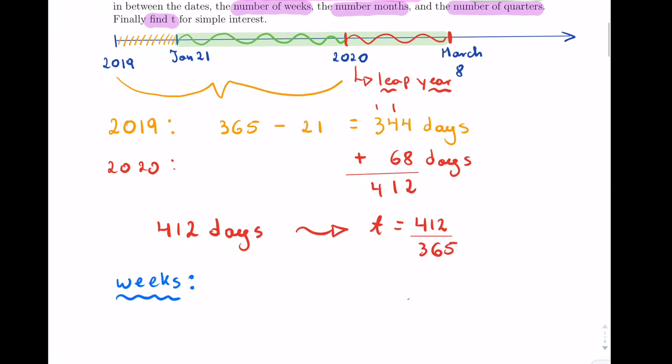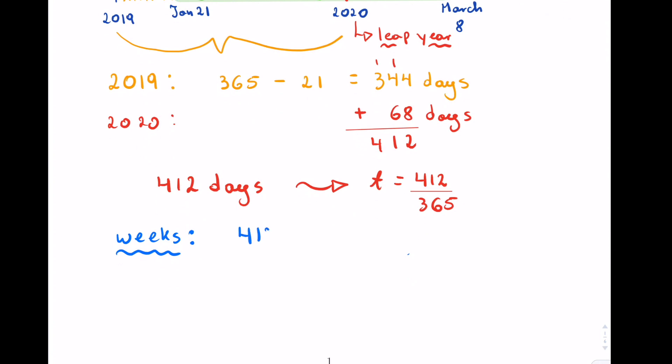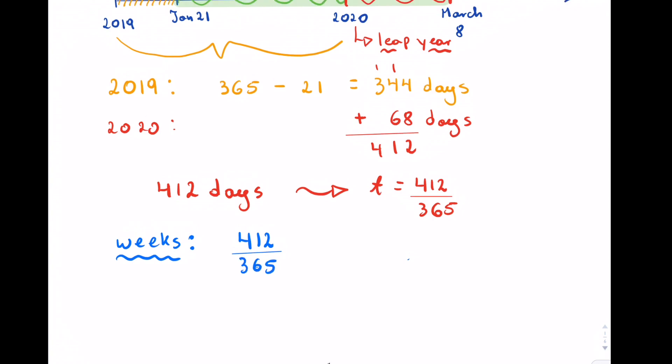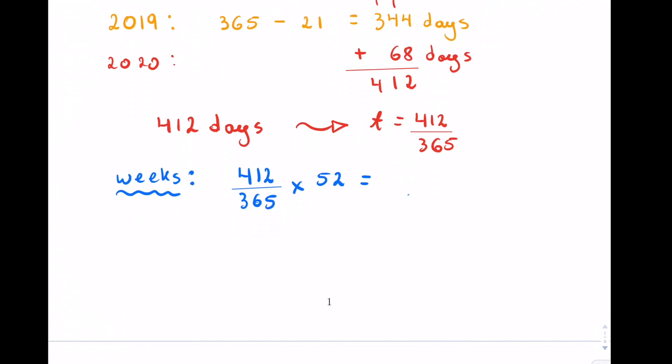If you want to know the number of weeks, there's a couple of ways we can do it. We can take the number of days and divide it by 7 because there's 7 days in a week, or if we know the number of years, we can multiply it by 52 because there's 52 weeks in a year. This is going to be 58.7 weeks.